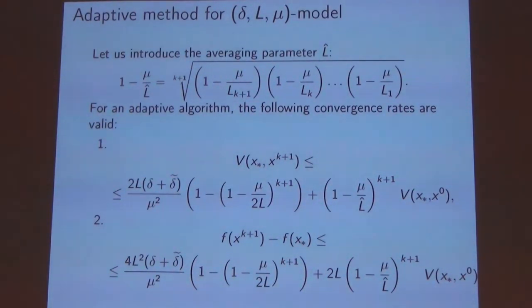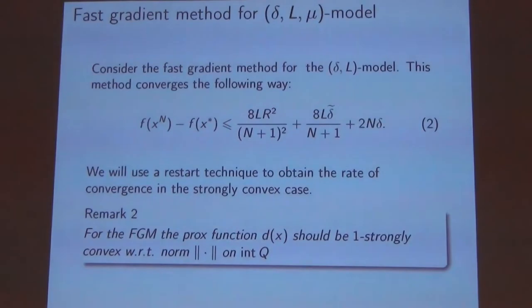Finally we'll try to have a fast gradient method for this Delta-L mu model. We have one for the Delta-L model, you can see how it converges in the second equation. Here it's important to say that it requires one-strong convexity of the prox function.